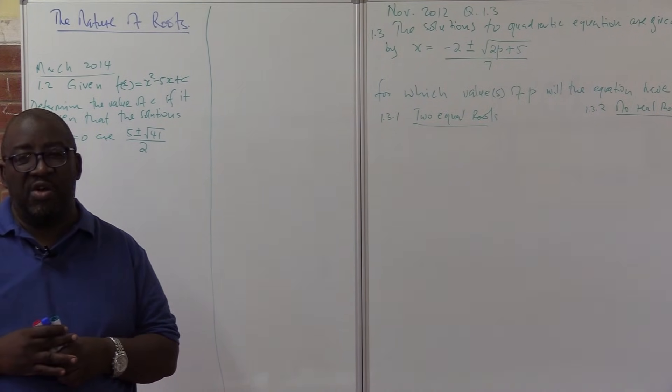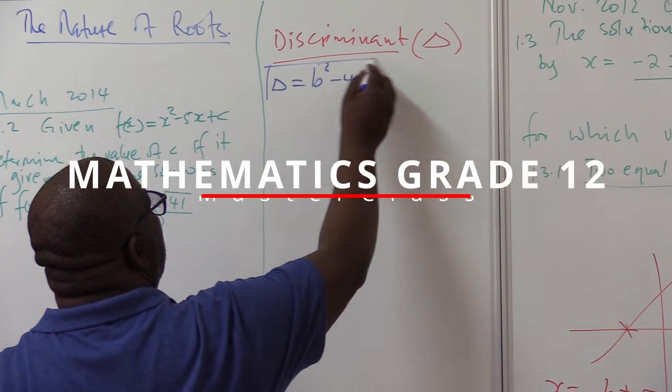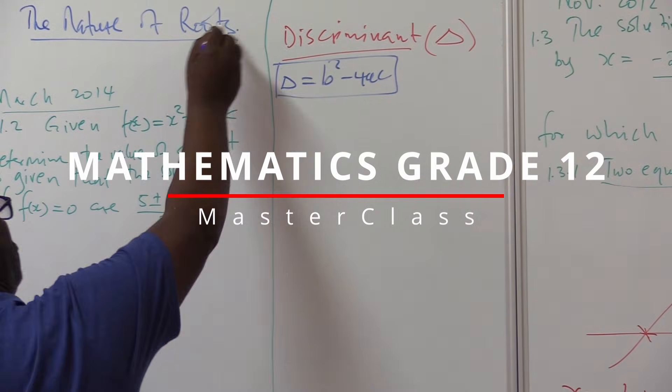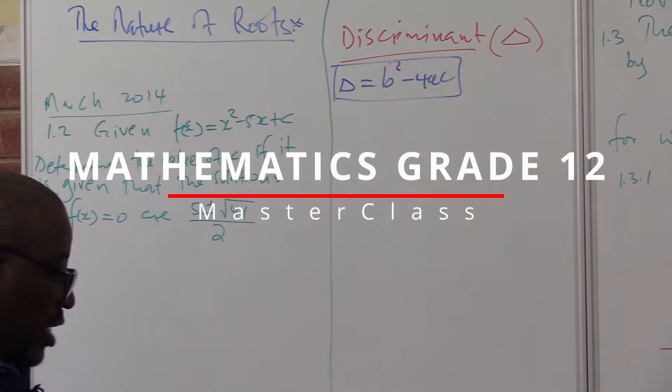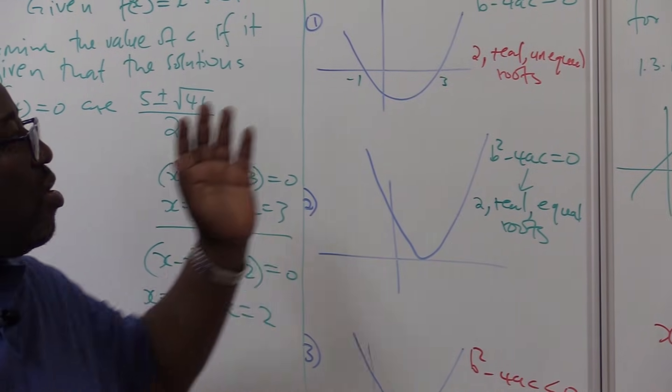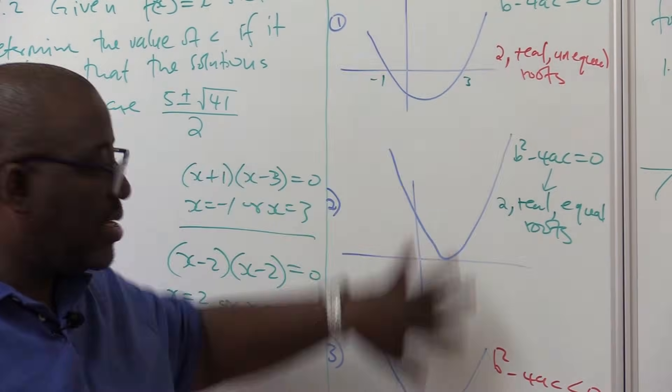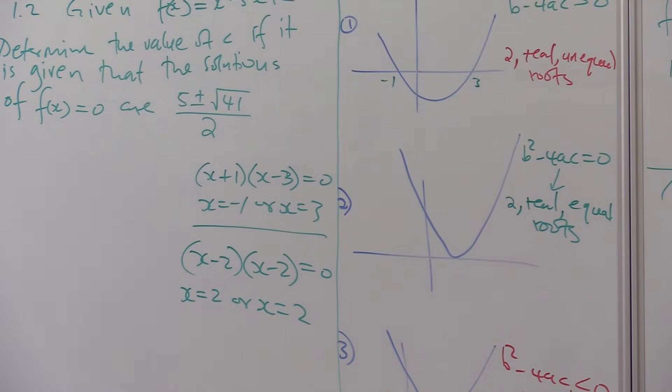We look at this part called the nature of roots. This is what we call the discriminant. This becomes important when we deal with this topic, the nature of roots. If you want to master this section called the nature of roots, you must master these three diagrams. It will make life easier for us.